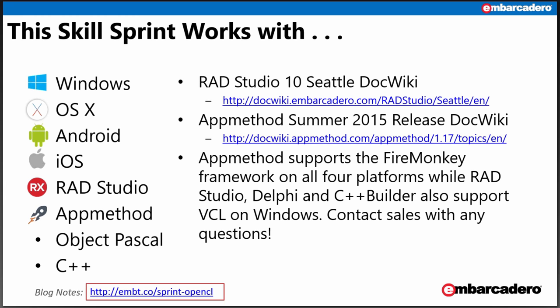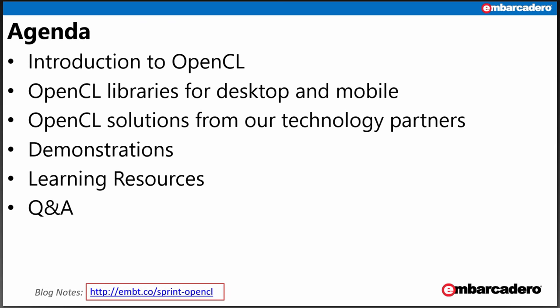This Skill Sprint works with Object Pascal and C++, providing you have the right libraries for doing GPU computing with OpenCL. You can build your applications on Windows and OS X. There may also be libraries for Android and iOS from third-party providers. We've got blog notes with all the links at embt.co/sprint-OpenCL. We'll cover OpenCL, what libraries you might need, and I'll focus on two technology partners with OpenCL solutions for Delphi and C++ Builder. We'll do some demonstrations, show links, and take questions at the end.